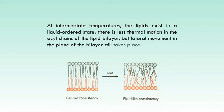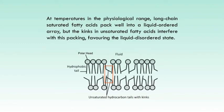At intermediate temperatures, the lipids exist in a liquid ordered state. There is less thermal motion in the acyl chains of the lipid bilayer, but lateral movement in the plane of the bilayer still takes place. At temperatures in the physiological range, long-chain saturated fatty acids pack well into a liquid ordered array, but the kinks in unsaturated fatty acids interfere with this packing, favouring the liquid disordered state. Shorter chain fatty acid groups have the same effect.